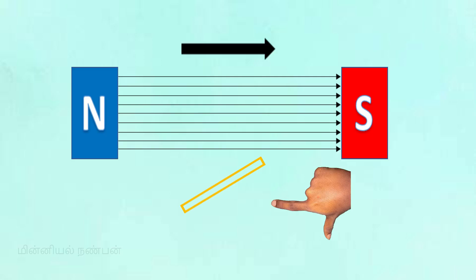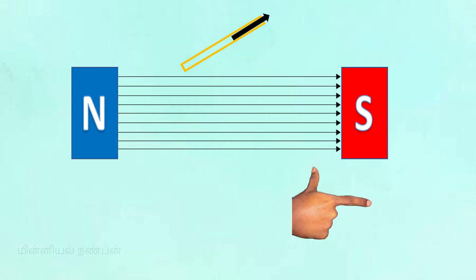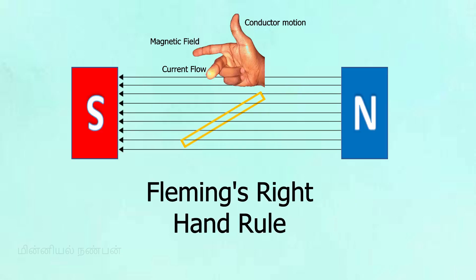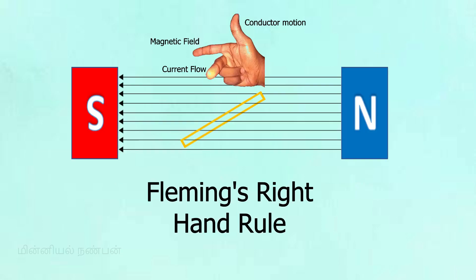Now let's look at the magnetic field direction. The magnetic field relates to the current direction. In this statement, the current flow follows the current direction, and we can analyze how all three — field, motion, and current — relate using Fleming's right-hand rule.